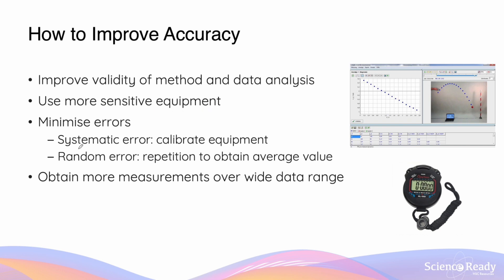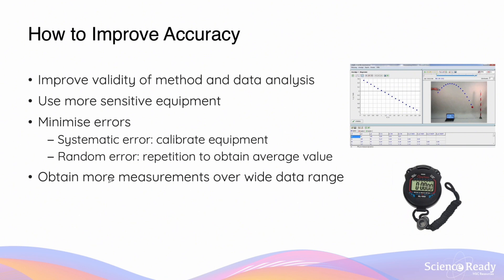Accuracy can also be improved by minimizing both systematic and random error. Systematic errors are usually due to inappropriate method or equipment that hasn't been properly calibrated, so think about how to calibrate the equipment. Random errors are harder to eliminate, but an effective method is to repeat the experiment and obtain an average value. Random errors can both overestimate and underestimate values, so averaging across enough repetitions cancels out the over- and under-estimation.